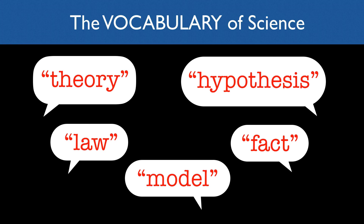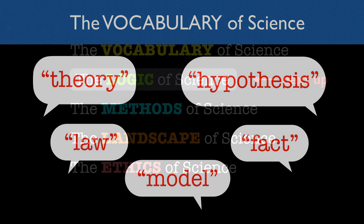And that's what I propose to do in this first unit, where we'll talk about the various ways in which each of these terms are used — theory, fact, law, hypothesis, and model — both within science and outside of science. We'll also deconstruct some of the vocabulary policing examples I referred to earlier to see exactly where they go wrong, and we'll apply our analysis to the evolution example, which seems to motivate so much of these vocabulary policing efforts.